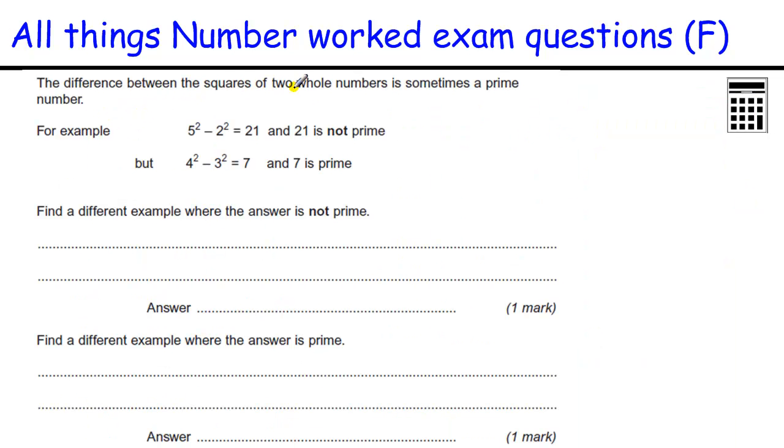The difference between the squares of two whole numbers is sometimes a prime number. For example, 5 squared take away 2 squared, so 5 squared is 25, take away 4 is 21. That is not a prime number. A prime number is numbers that can only be divided by itself and one, whereas the number is not one, so it has to have two factors. 21 equals 3 times 7, so that is not a prime number. But 4 squared, which is 16, take away 3 squared, which is 9, is 7, and 7 is a prime number because 7 can only be written as 1 times 7, nothing else.